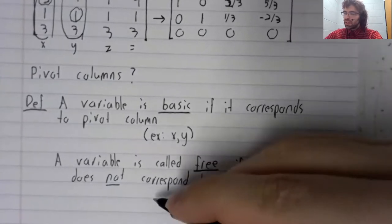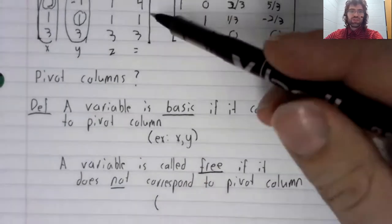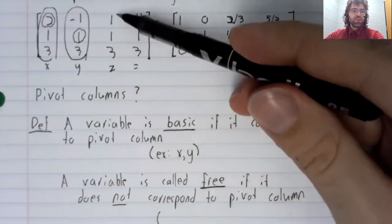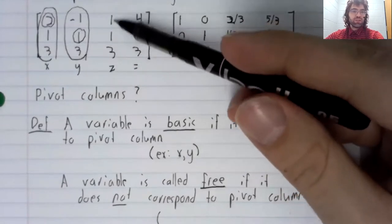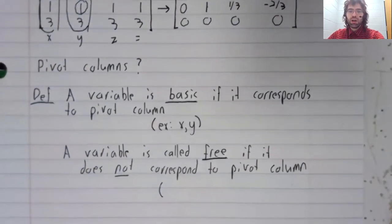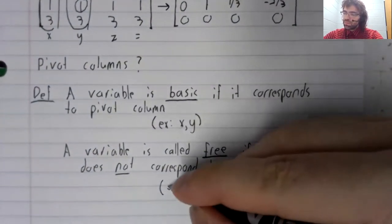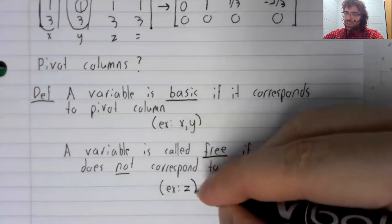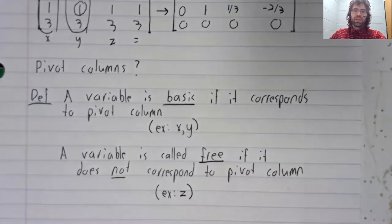So again, in terms of this example, this variable z, there are no pivot positions in this third column. It's not a pivot column, and z is therefore a free variable.